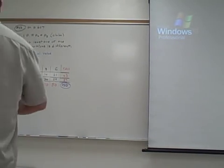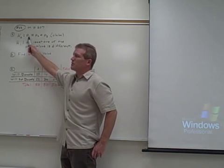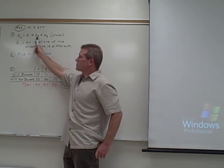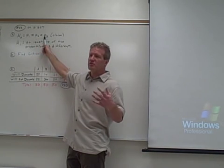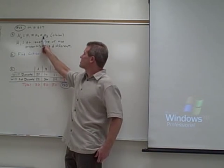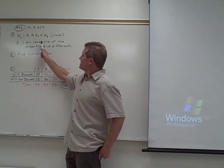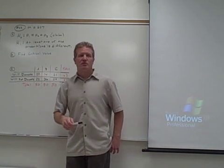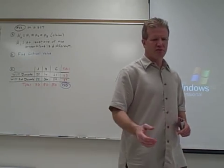My null hypothesis says that the proportions are equal — the proportion in neighborhood A equals the proportion in neighborhood B equals the proportion in neighborhood C that are willing to donate their organs. That's the claim. The alternative is that at least one of these proportions is different. We don't say they're all different — just that at least one is not the same as the others.